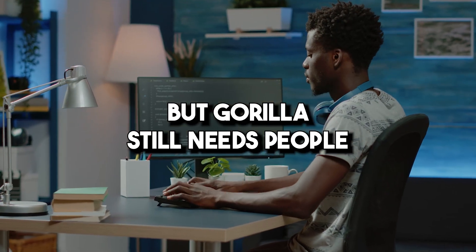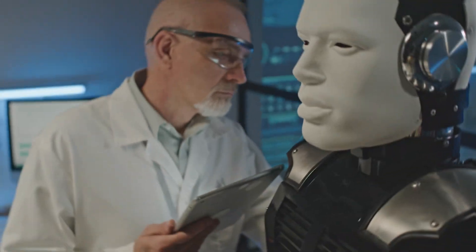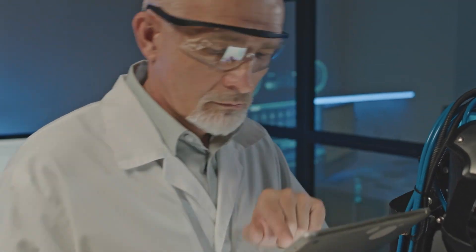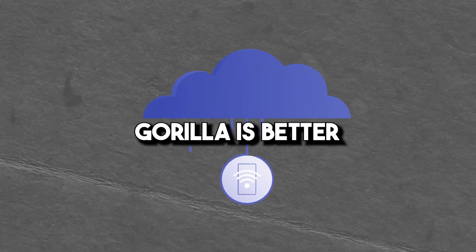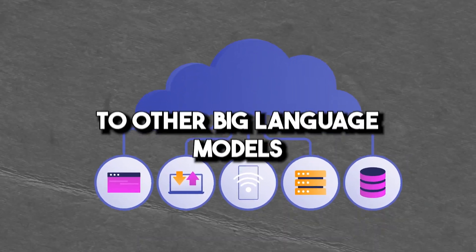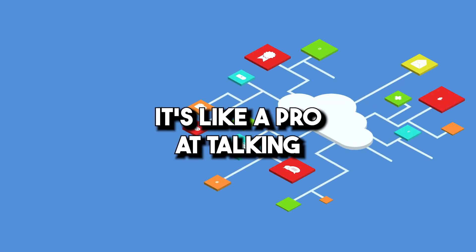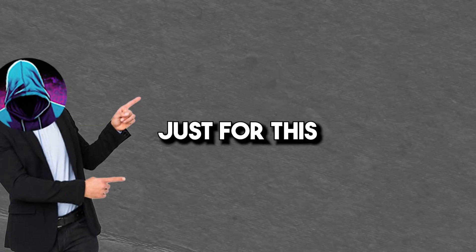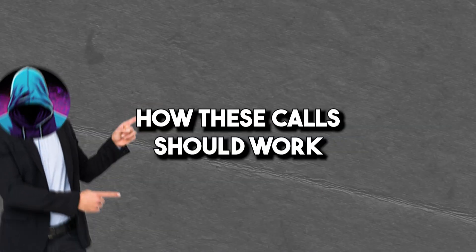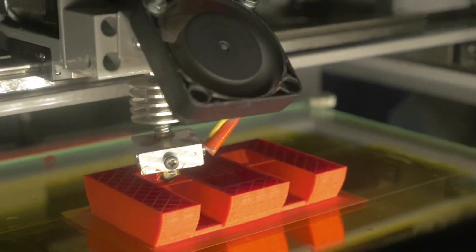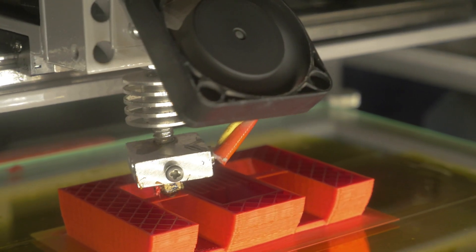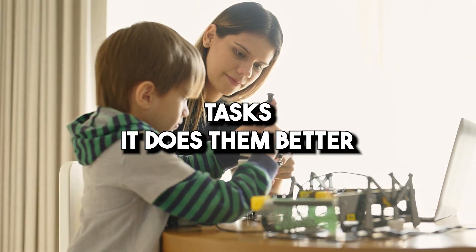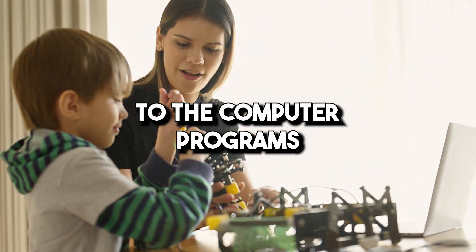But Gorilla still needs people to give it info and rules to follow. It can't do things that need feelings, creativity, or just regular common sense. Gorilla is better at making API calls compared to other big language models. It's like a pro at talking to computer programs through these special calls. Because Gorilla has been trained just for this, it really understands how these calls should work. This means when it makes these calls, they're super accurate and work really well. So when Gorilla does tasks, it does them better because it knows exactly what to say to the computer programs.